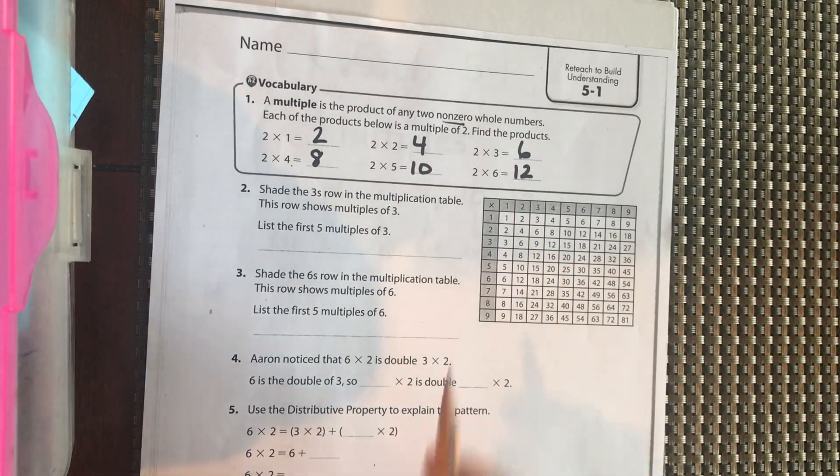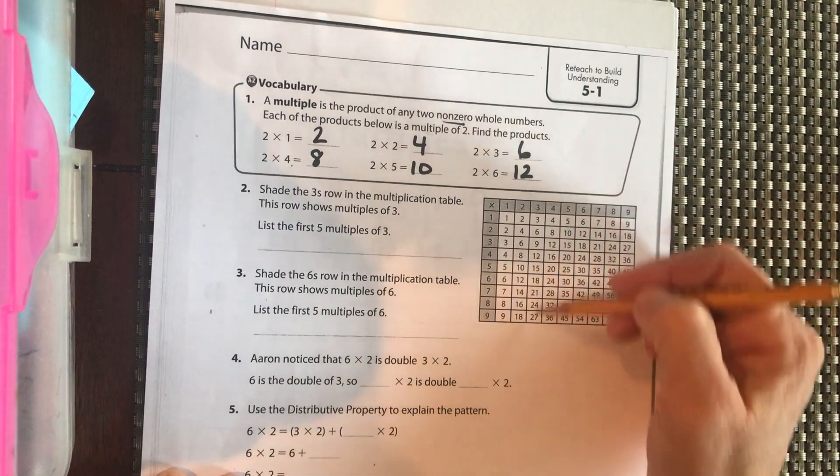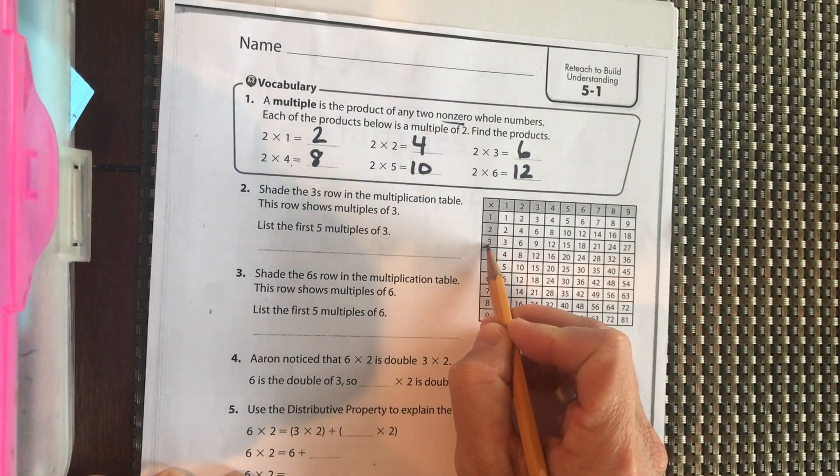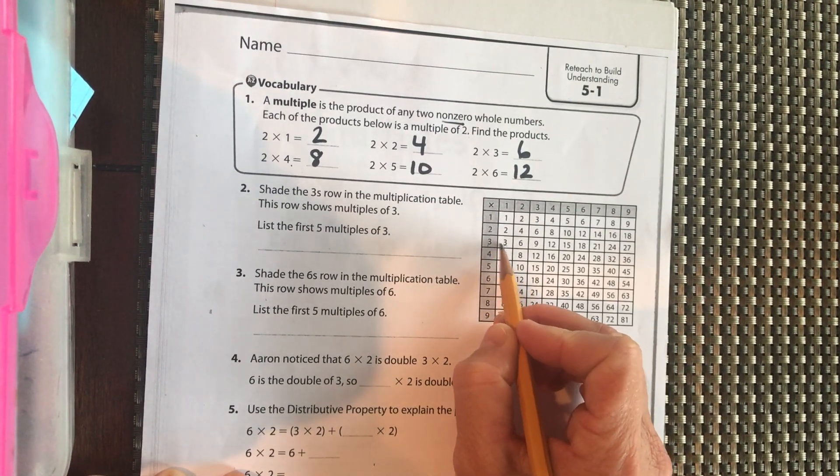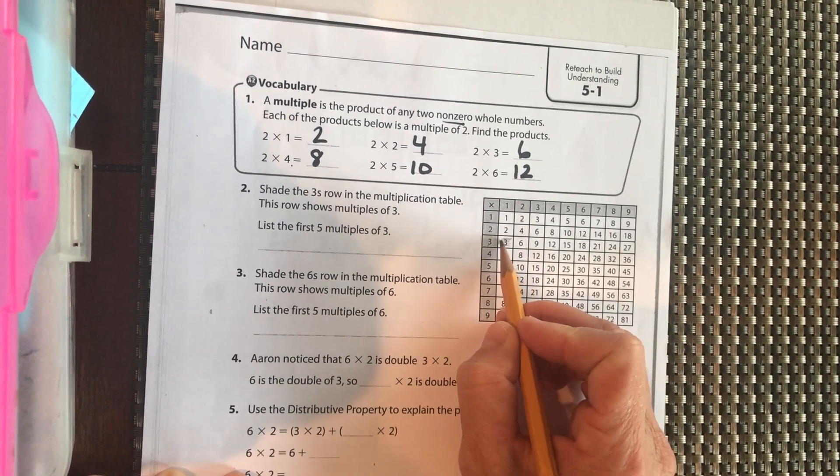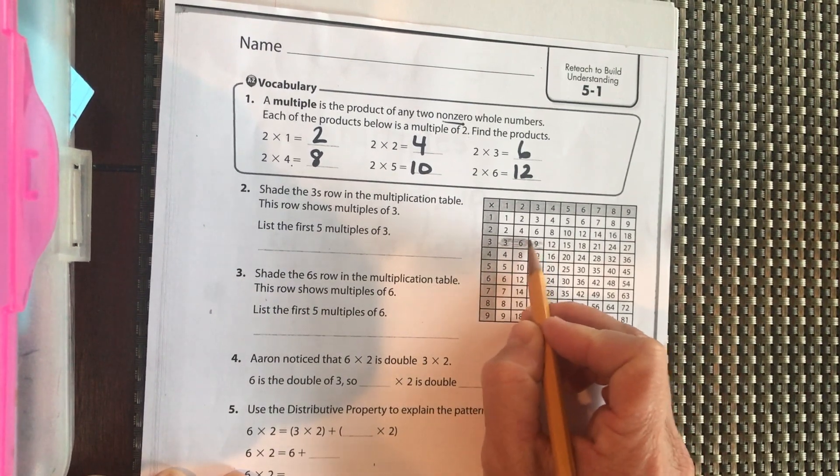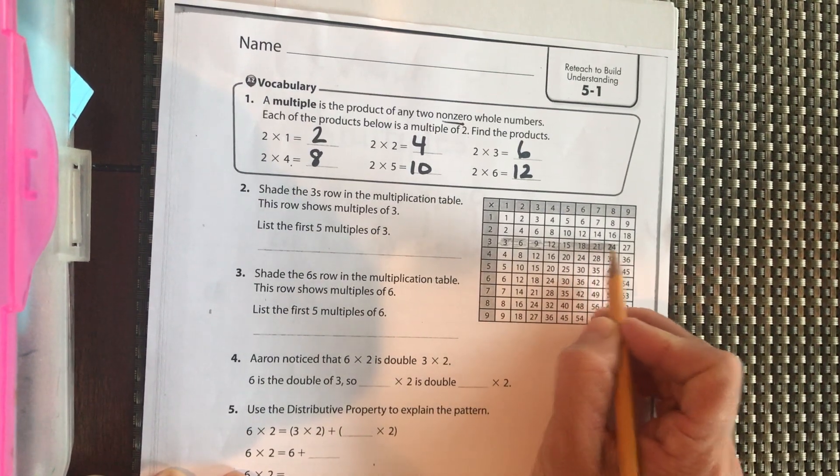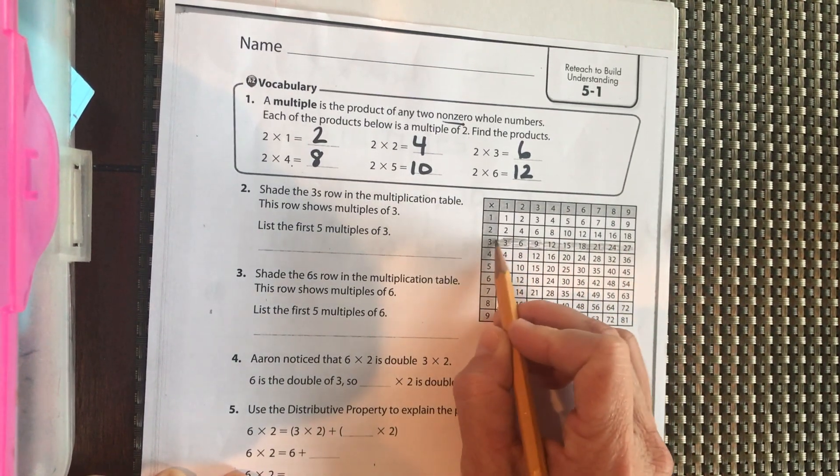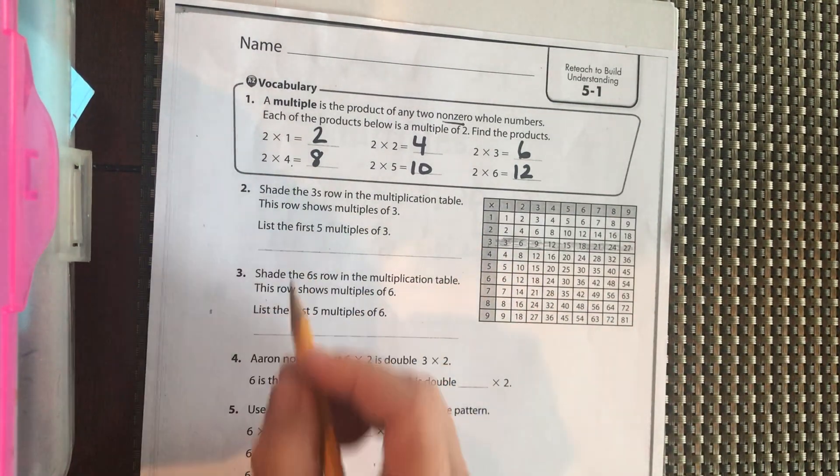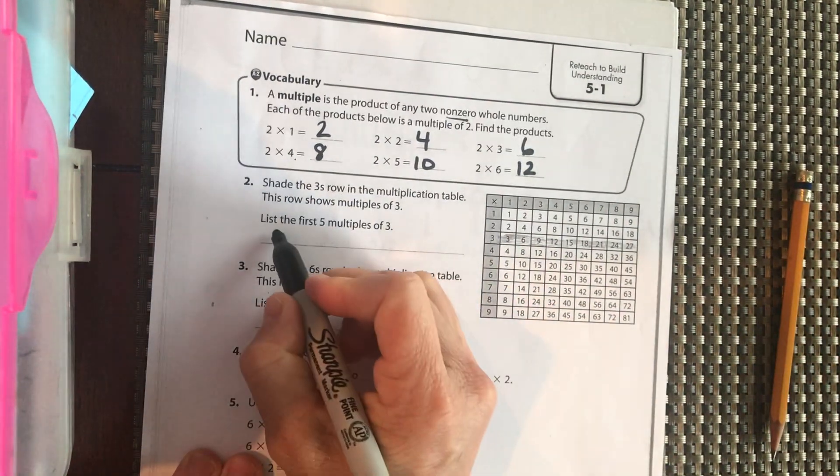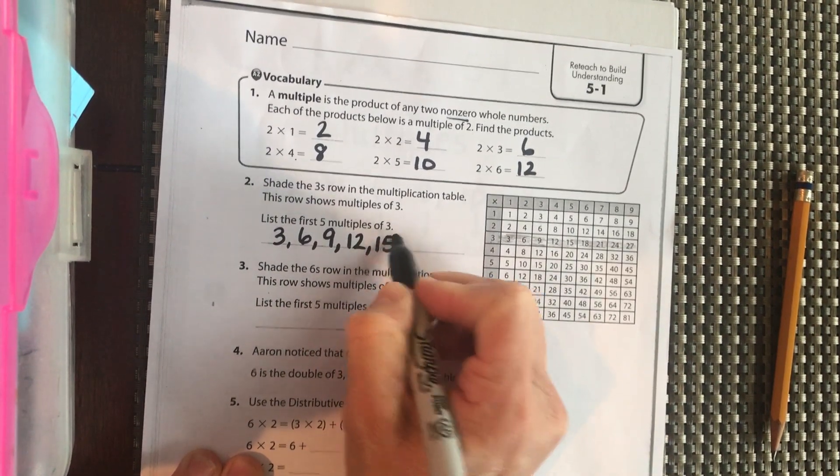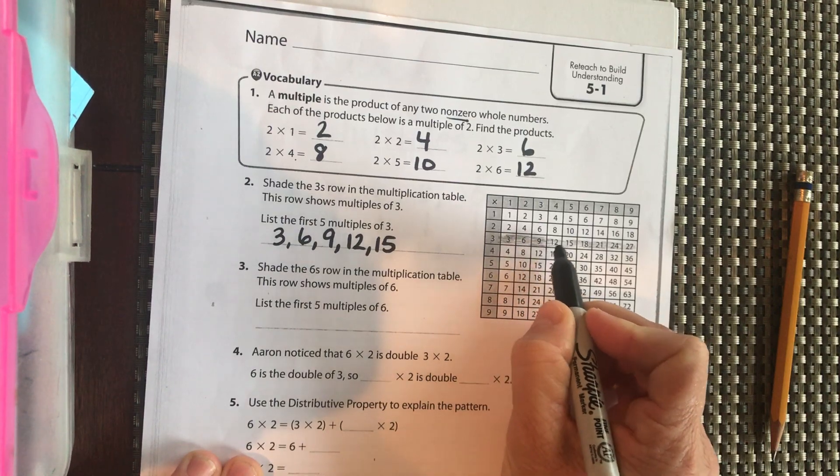Okay, shade the threes row. Remember, rows go across, columns go down. This is a multiplication table. Okay, so here we have multiples of 3 right here. So 3 times 1, 3 times 2, 3 times 3, 3 times 4, 5, 6, 7, 8, and 9. So we're shading the multiples of 3. They want us to list the first 5 multiples. So that would be 3, 6, 9, 12, and 15. 1, 2, 3, 4, 5.